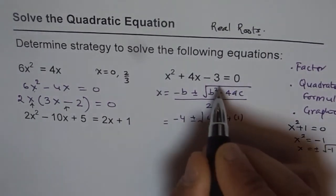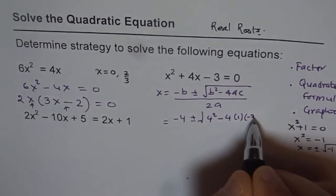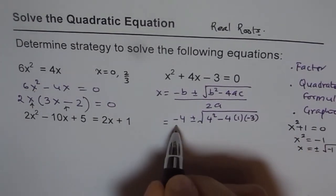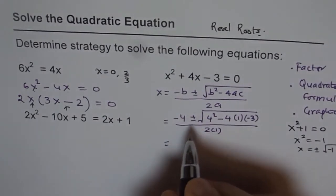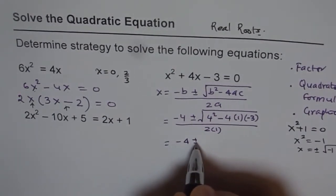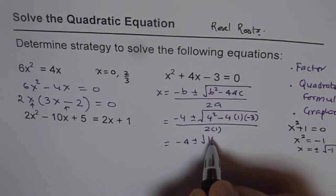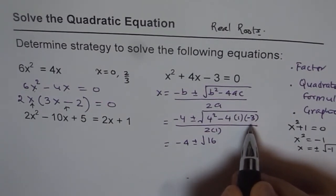and c is -3 square root, divided by 2 times, which is 1 is a. Now we can evaluate this, and we get -4 ± √16, and 4 times 3 is 12,